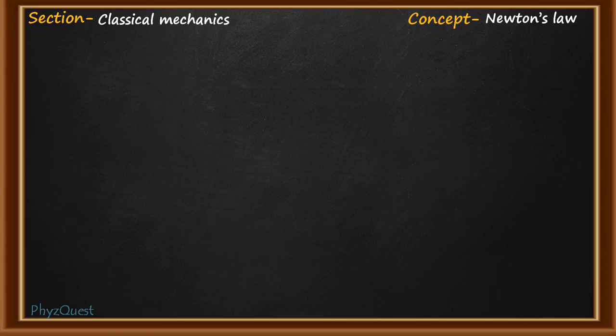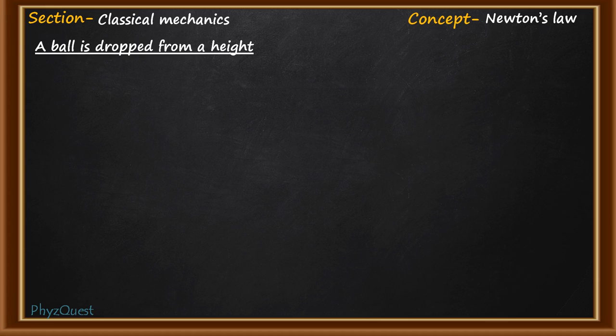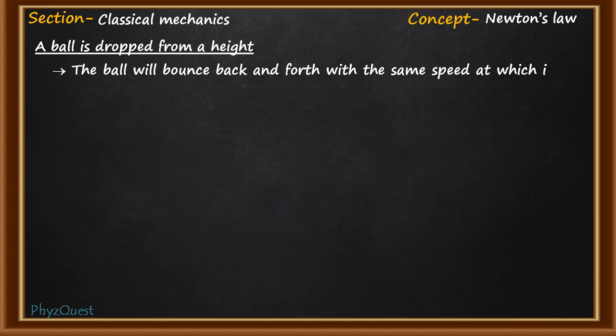This question is based on the section classical mechanics and the concept involved here is Newton's law. We have a ball which is dropped from a height. When a ball is dropped from a height, one possibility is that the ball will bounce back with the same speed at which it hits the ground — this situation is called an elastic collision.